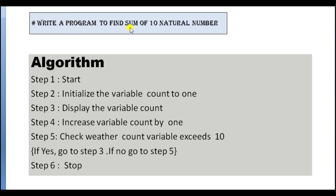In another program: write a program to find the sum of 10 natural numbers. Natural numbers are those numbers starting from 1. In algorithm — Step 1: Start. Step 2: Initialize the variable count to 1. Step 3: Display the variable count. Step 4: Increase the variable count by 1. Step 5: Check whether the count variable exceeds 10. If yes, go to step 3. If no, go to step 5. Step 6: Stop the program.